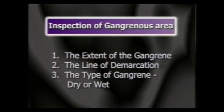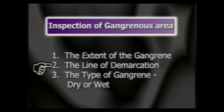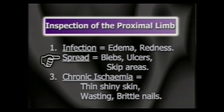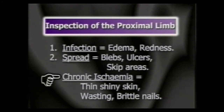To revise: first inspect the gangrenous area — note the extent of the gangrene, the line of demarcation, and the type of gangrene, whether dry or wet. Then examine the proximal limb for evidence of infection, i.e. edema and redness; for evidence of spread of gangrene, i.e. blebs, ulcerations and skip areas; and evidence of chronic ischemia — thin, shiny skin with scanty hair, wasting, and brittle nails with transverse ridges.